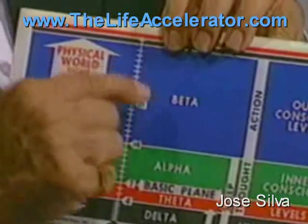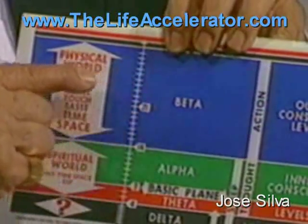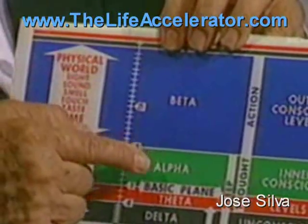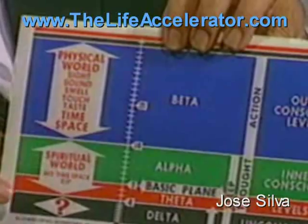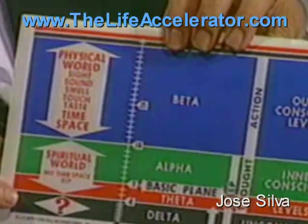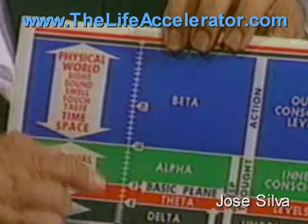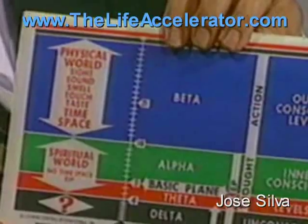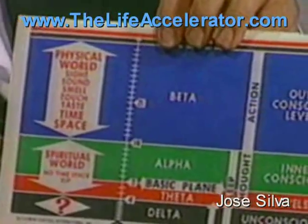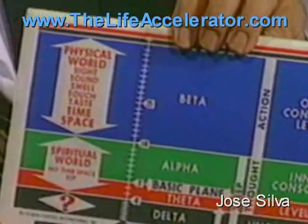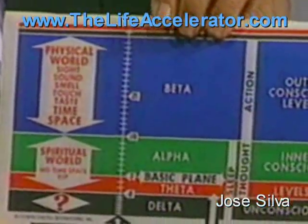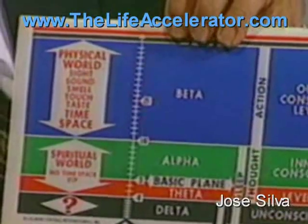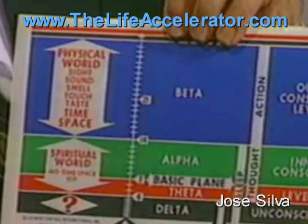The blue for us is the outer conscious, and the green and red is the inner conscious. We are the first ones to start using the concept of inner consciousness — there was no such thing before we came on the scene. This is a chart that explains the brain frequencies.